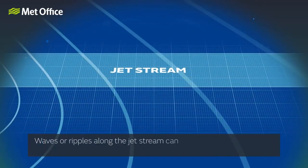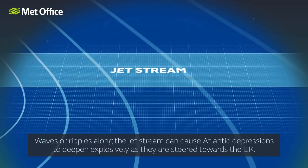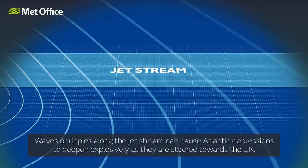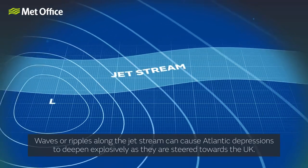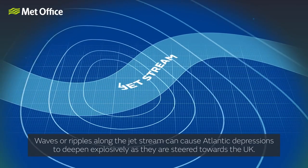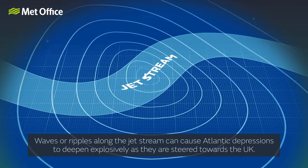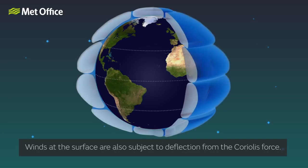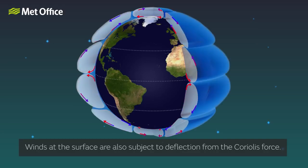Waves or ripples along the jet stream can cause Atlantic depressions to deepen explosively as they are steered towards the UK. Winds at the surface are also subject to deflection from the Coriolis force.